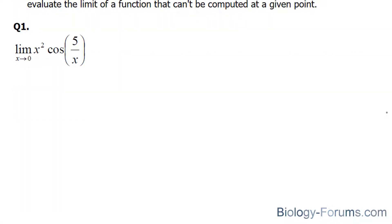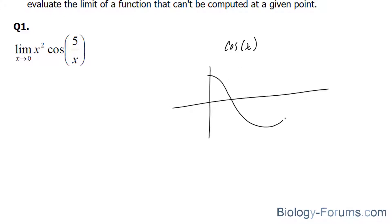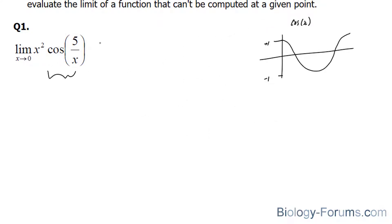In question number one, they are asking us to find the limit as x approaches 0 for the function x squared times cosine of 5 over x. So we'll start off with what we know. We know that the cosine function hovers between positive 1 and negative 1. So we can say that cosine of 5 over x has to be between negative 1 and cosine 5 over x.